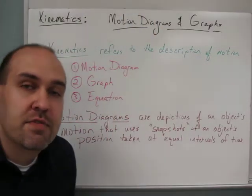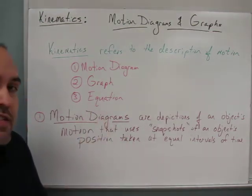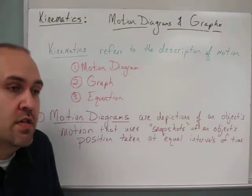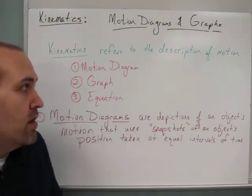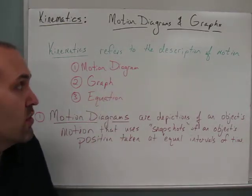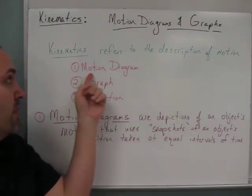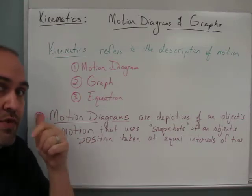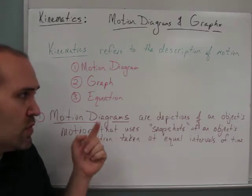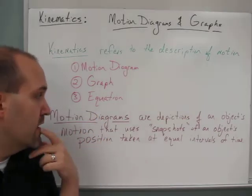Welcome back. This video begins our discussion of kinematics — a fancy word that just refers to the description of motion: how fast an object is moving, what direction, is it speeding up or slowing down, etc. We're going to look at three ways to describe an object's motion: using a motion diagram, using a graph with x and y axes, and using equations, which we'll talk about in another video.